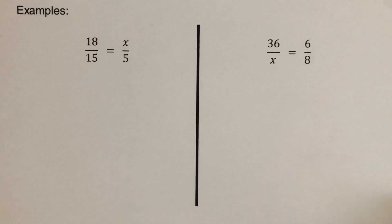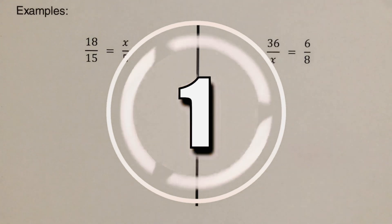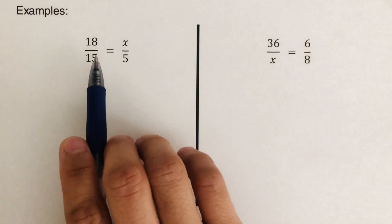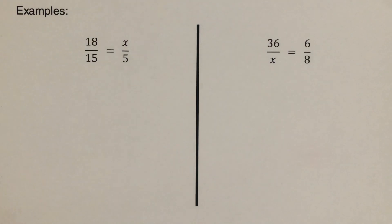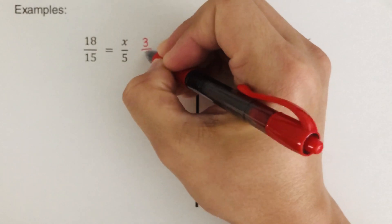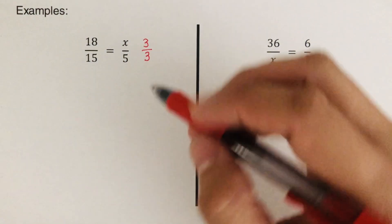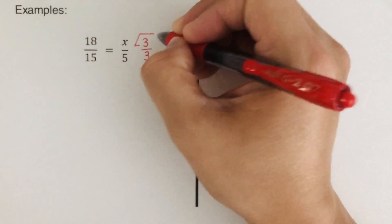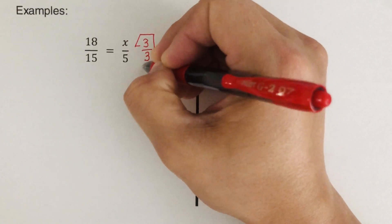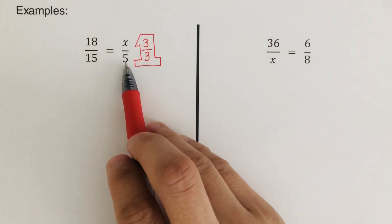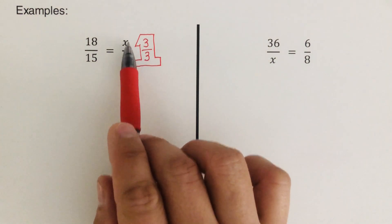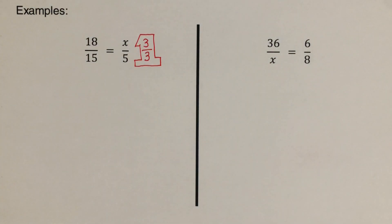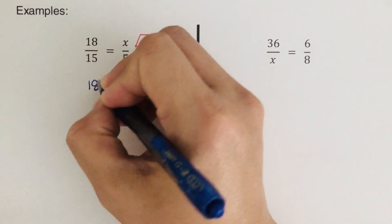I would encourage you to pause the video and try the next problem on your own, then check your answer. Okay, let's go over it. We figure out what number to multiply by five to make it 15 — that number is three. So we multiply the numerator by three and the denominator by three. Three divided by three is one, and that's the giant one. Remember, it must be both the numerator and the denominator — others miss this and multiply only one of them. So from here we have 18 over 15.